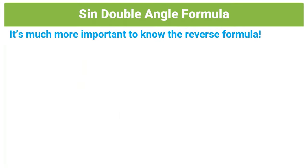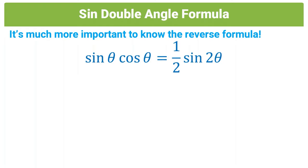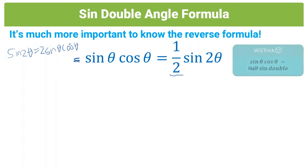It's much more important to know the reverse formula because it's more helpful in difficult exam questions. The reverse formula is a rearrangement of the original: since sin 2θ = 2 sin θ cos θ, dividing by 2 gives us sin θ cos θ = ½ sin 2θ. The trick I like to use is: sine theta times cos theta equals half sine double angle.